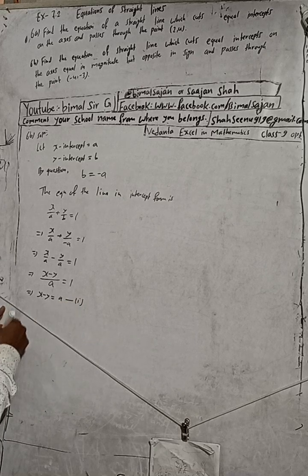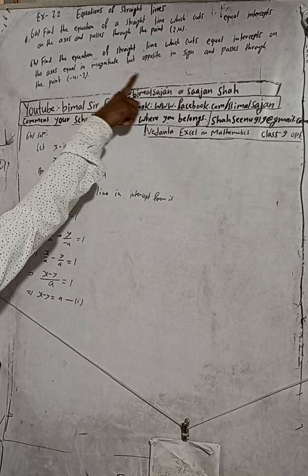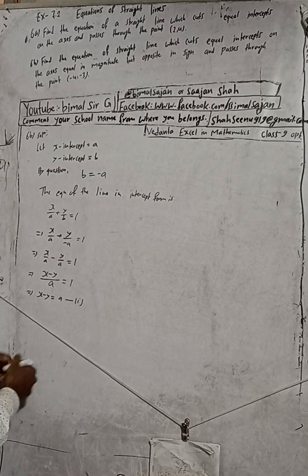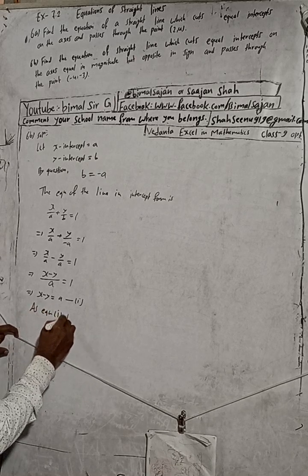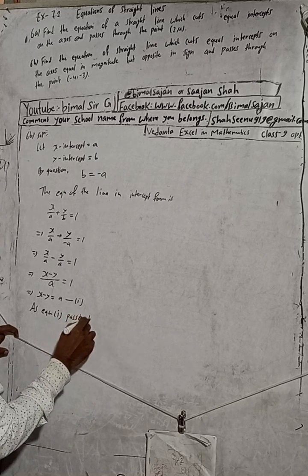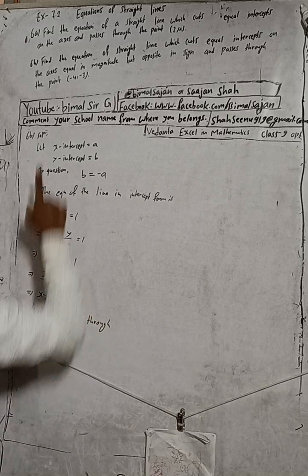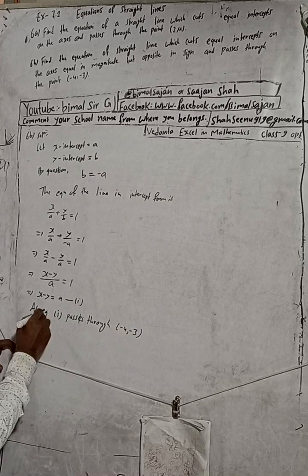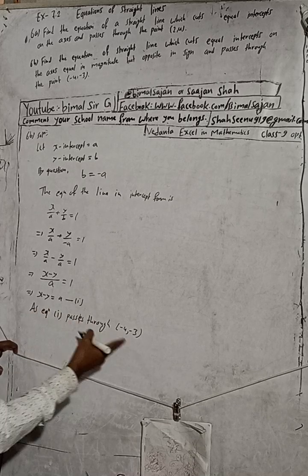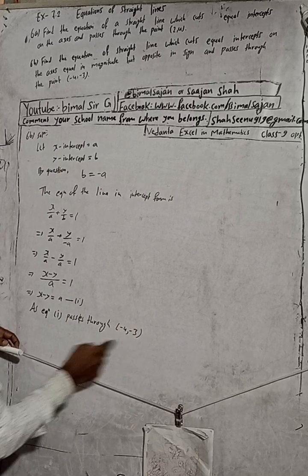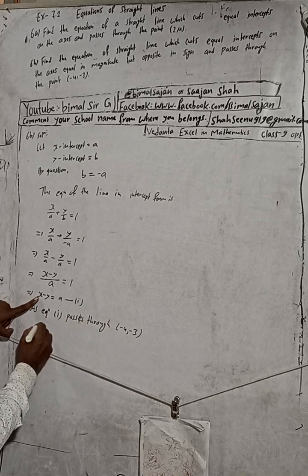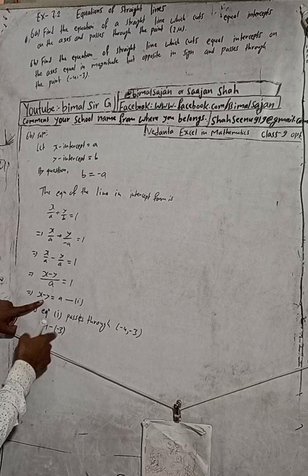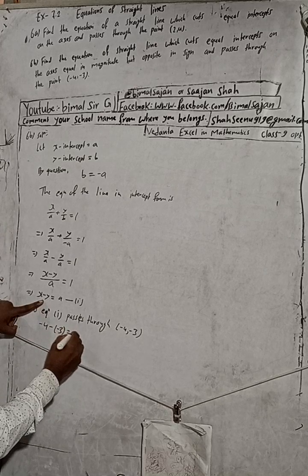The line passes through the point (-4, -3). So in equation (1), x - y = a, we substitute x = -4 and y = -3. Putting them in brackets: (-4) - (-3) = a.